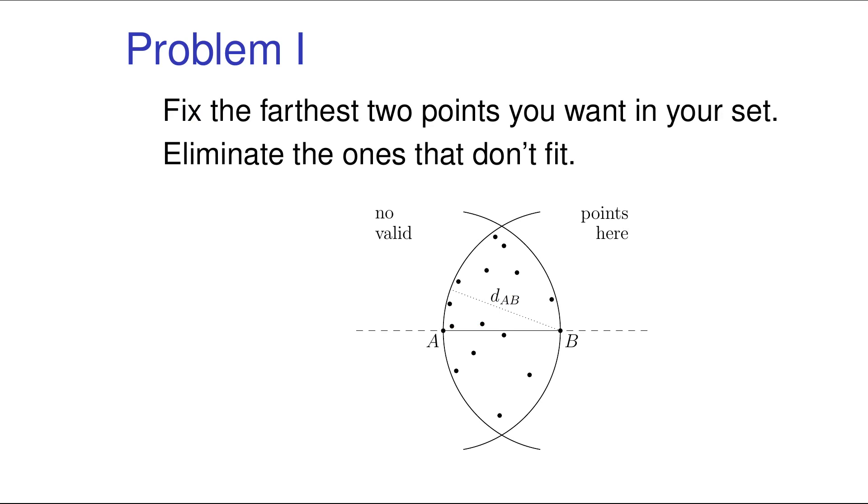The trick is, when you are trying to find the optimal set, you can start by using a little bit of brute force. What we will try to do is we will try to fix the farthest two points we want in our set. So suppose that we already chose that these will be the points A and B shown in the picture.